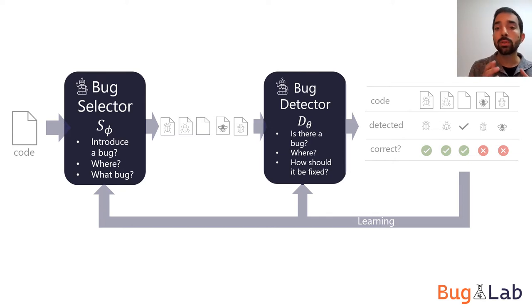First, let's focus on the selector and detector. Each one of them accepts some representation of code, and it has to find the location where the code will be rewritten, and then decide what rewrites to make. The selector and detector models can be implemented using the same architecture, but are trained using different objectives.